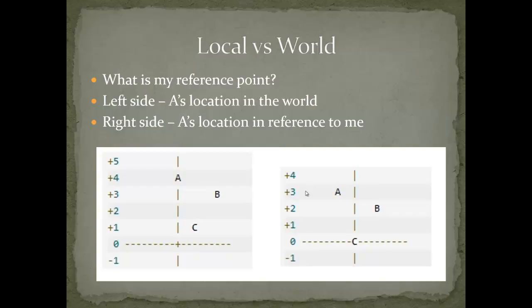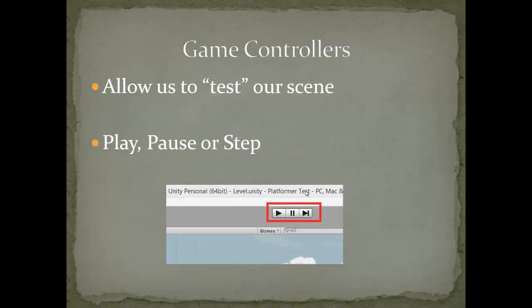In the top center of the screen, we have the Game Controllers button — that's where we do Play, Pause, or Step. We can step through different levels or events. That's where we test our game in the simulation environment to see if it's doing what we want: is my character moving fast enough, is my gun shooting, that kind of stuff.